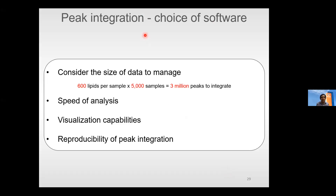One of the last parts of the analysis is peak integration. You have to consider the size of the data you have to manage — if you measure 600 lipids for 5,000 samples, that is 3 million peaks to integrate. Consider whether to do it manually or automated, how fast your software is, whether you can visualize all spectra at the same time, and what the reproducibility of the software is in integrating peaks. These factors might lead you to choose a specific software that may not be your vendor's default.